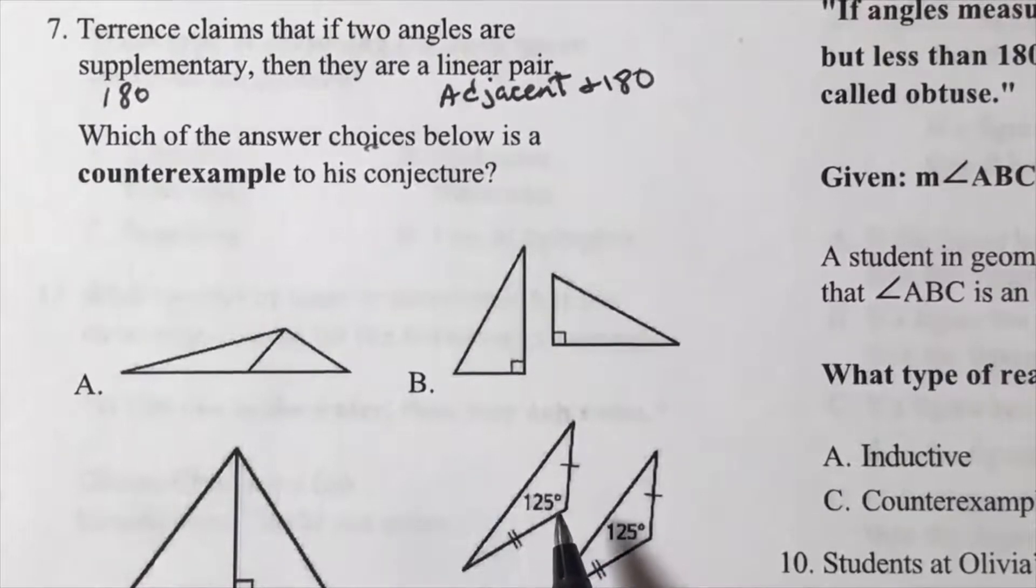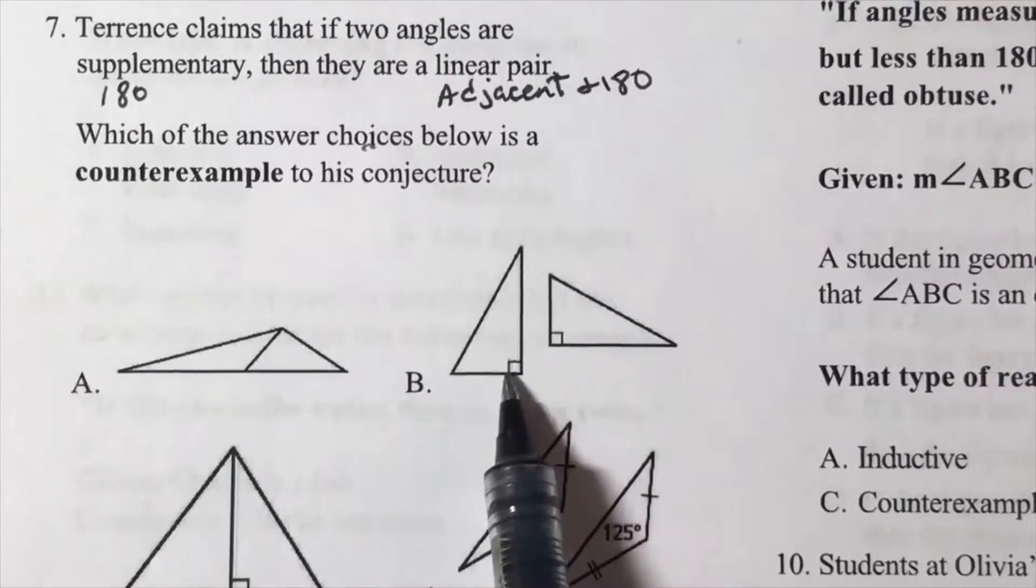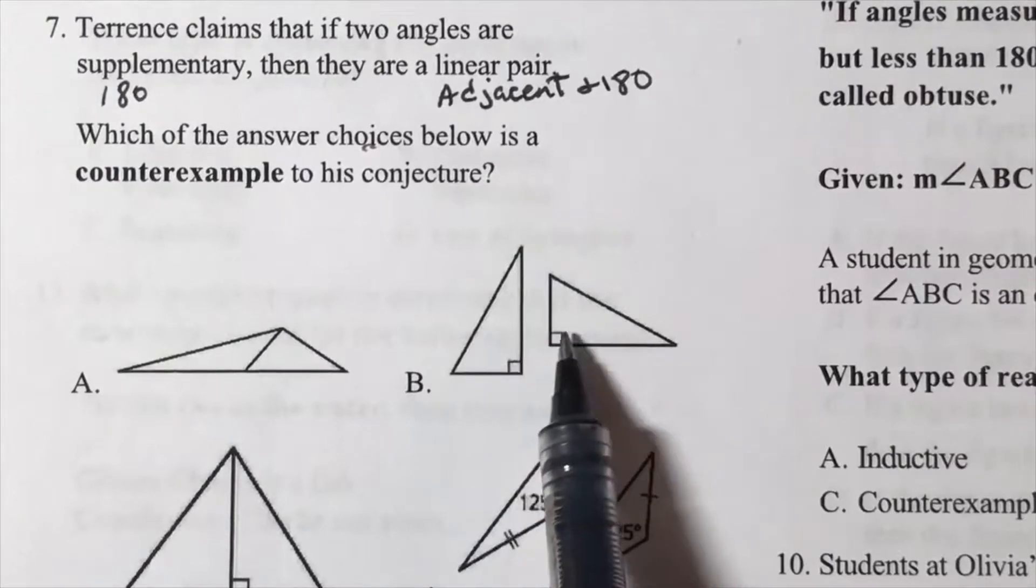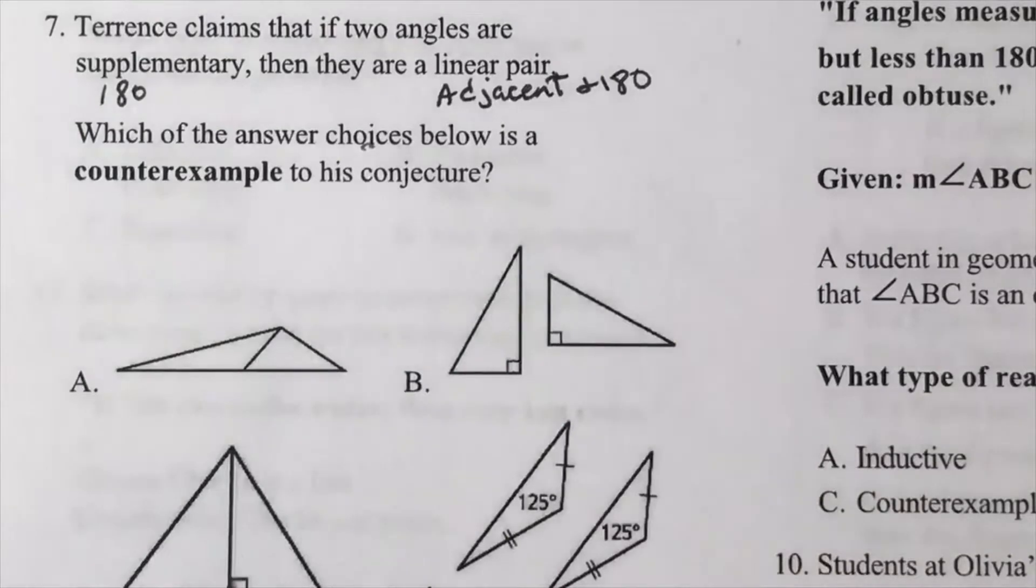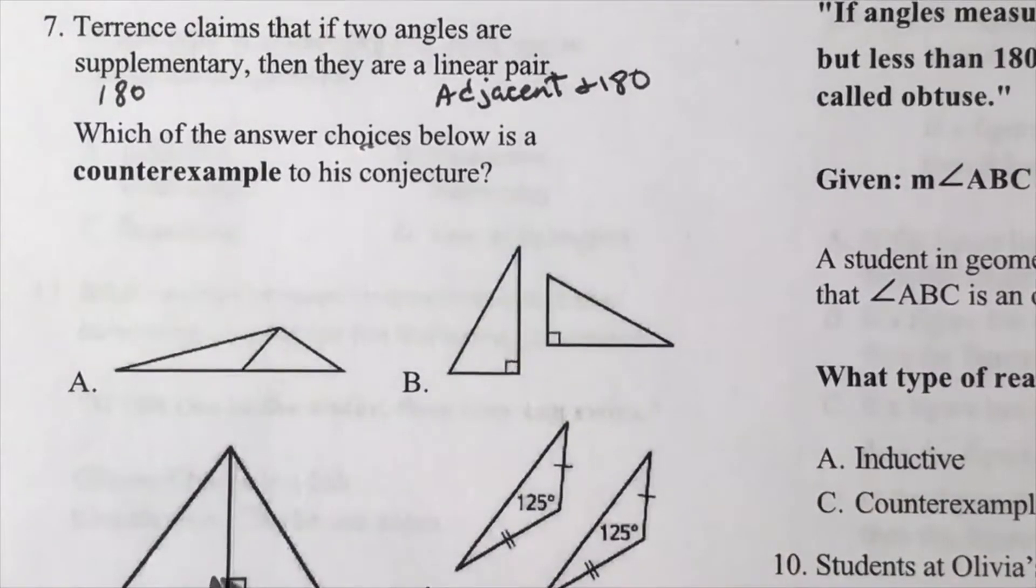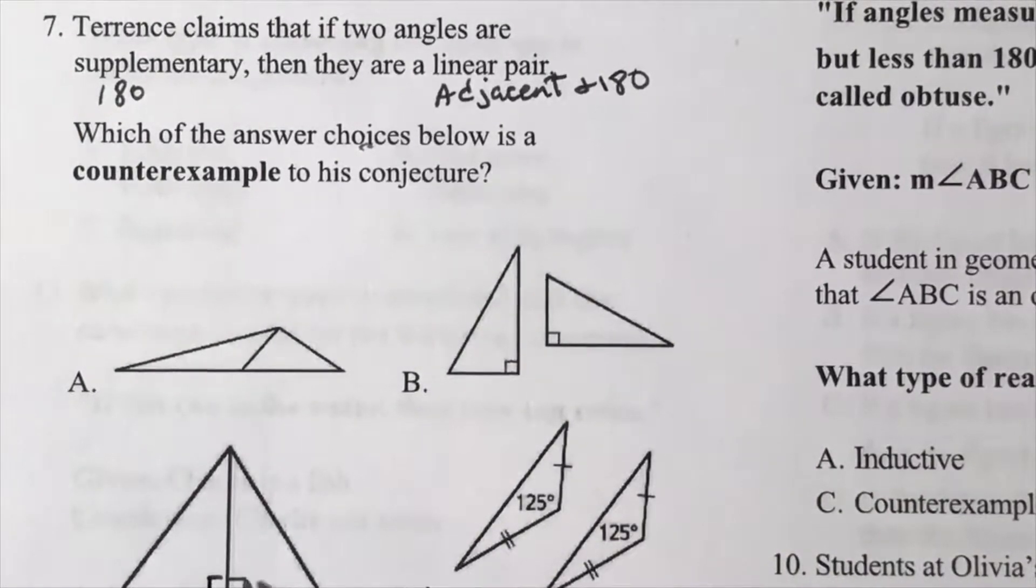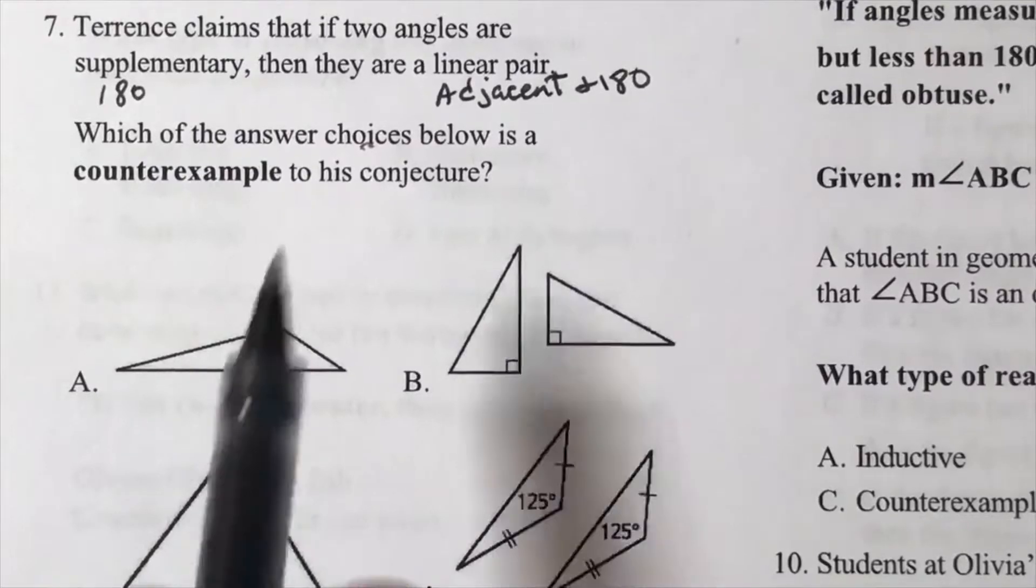Here these are 90s, they add up to be 180, so that's satisfying the hypothesis. All right, this is a 90, therefore this is also a 90, so these are satisfying the hypothesis.